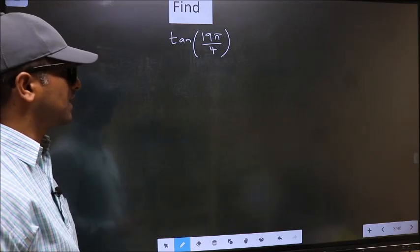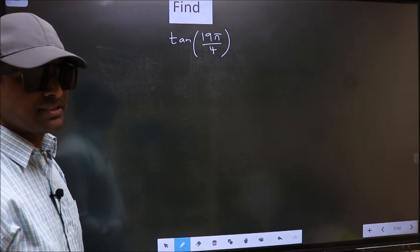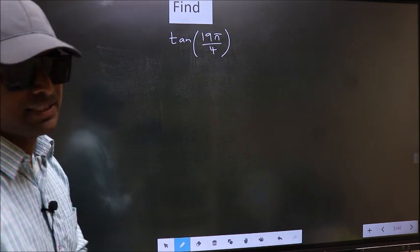Find tan 19 pi by 4. To find this, we should follow this method C.